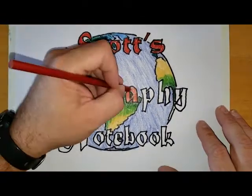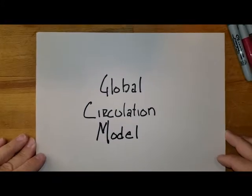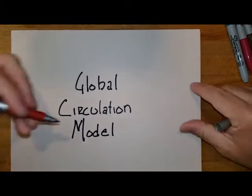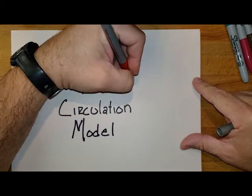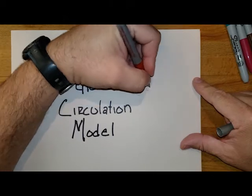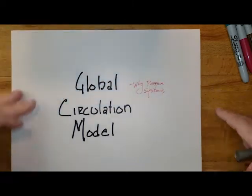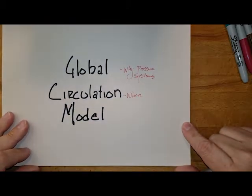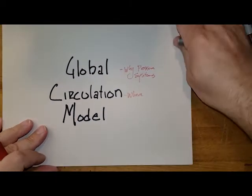With the global circulation model, there are a few things we need to understand. The first thing we want to get a grip on is why we get high pressure and low pressure systems. We'll then want to take a look at where we get them, and then see how all of them fit together globally.